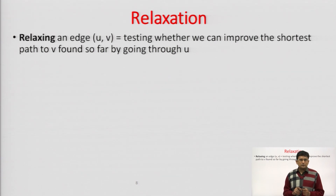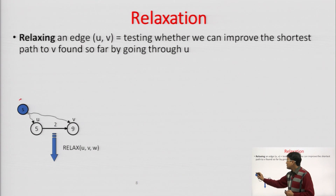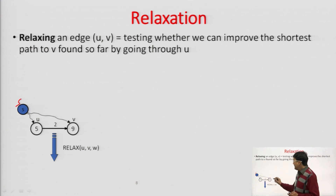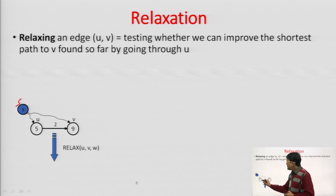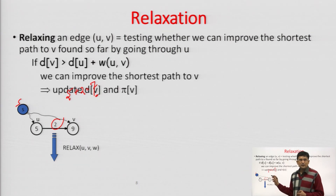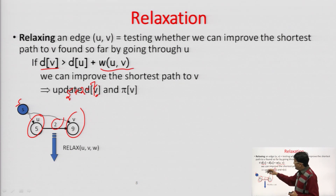Now, about relaxation. In Dijkstra's algorithm, we will be using the relaxation concept. The source S is defined. We have vertices U and V, the edge cost between U and V is 2, the distance of U is 5, and the distance of V is 9. If you go from U to V, the cost of the edge is 2, so the total cost should be 5 plus 2, that is 7, and 7 is smaller than 9. So the relaxation algorithm checks: if d(V) is greater than d(U) plus w(u,v), then it will update the distance of V with d(U) plus w(u,v).